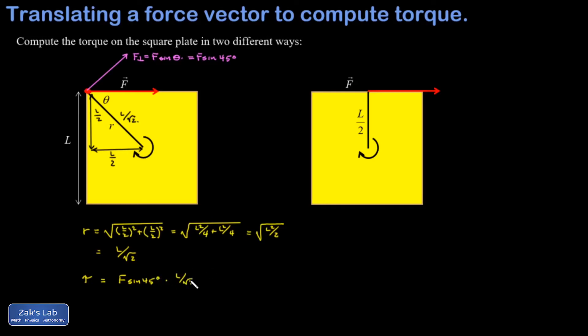I have to remember the sine of 45 degrees is 1 over root 2. So I have FL times 1 over root 2 times 1 over root 2, which gives me 1 half, and I end up with 1 half FL.